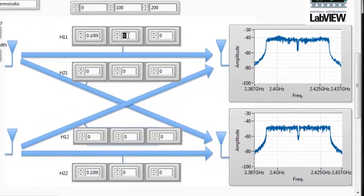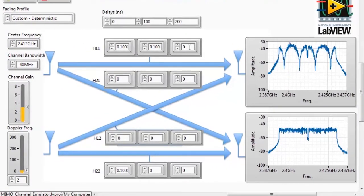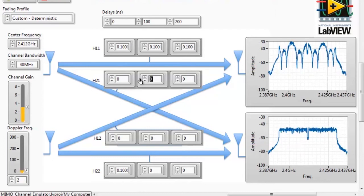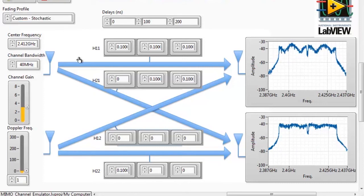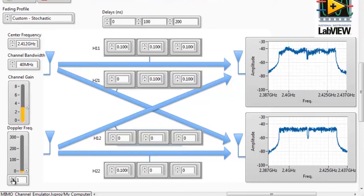I can put in some impairments showing spectral nulls at delays of 100 and 200 nanoseconds, respectively. I can also add interference from adjacent channels. Here we're also showing interference from channel 2 onto channel 1. And this model is deterministic, so we're testing our signals. But if we move to a stochastic model, we can see what this would look like in real time. As I modify the Doppler frequency, this shows how quickly the environment changes. We can see that represented in the graphs to the right.